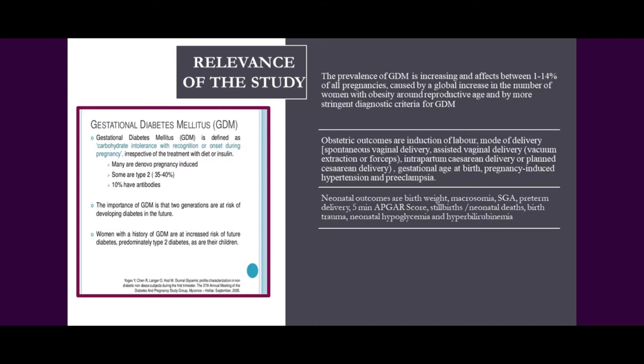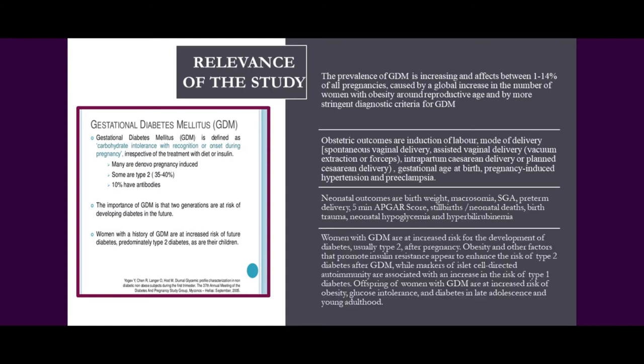Obesity and other factors promoting insulin resistance also appear to enhance the risk of Type 2 diabetes after gestational diabetes mellitus develops. There is an increased risk of Type 2 diabetes throughout life. Offspring of these women are also at greater risk, as they may later develop obesity, glucose intolerance, and diabetes in late adolescence or young adulthood. This diabetes which develops during gestation is thus a threat to the mother and the baby, affecting two generations.